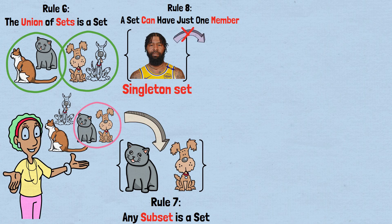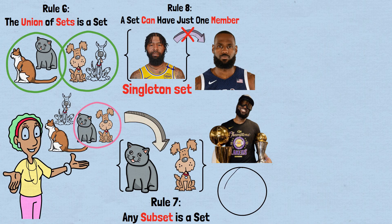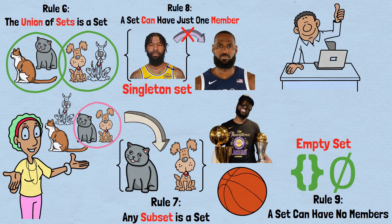Importantly, this set is not the same as LeBron James himself. LeBron James has won NBA championships. The set containing him has never played basketball. Rule nine, a set can have no members. The empty set, sometimes shown as curly braces with nothing inside them, or as a zero with a line through it. So far, so good, but now we approach the rules that will lead us into trouble.